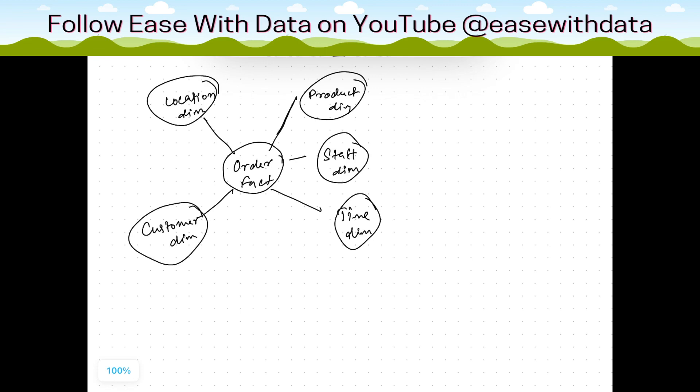So this is a data model for order. We have order as a fact. We have other dimensions: product, staff, time, customer, and location.